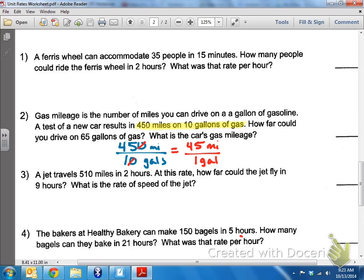So how would I figure out how far I could drive on 65 gallons? You're probably thinking, well, if one gallon is 45, just multiply it by 65. Now, here's the mathematical way of thinking about it. Let's set it up so I know that 45 miles will get me that far off one gallon. But now I want to know how far I can get off of 65 gallons. So think about it this way. How do I make the one gallon 65 gallons? Well, of course, I multiply it by 65.